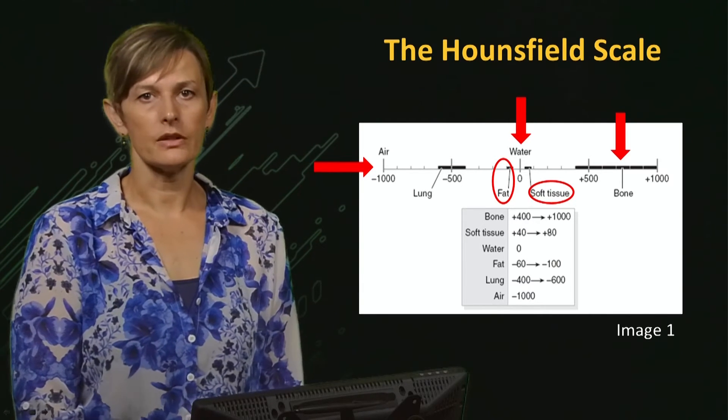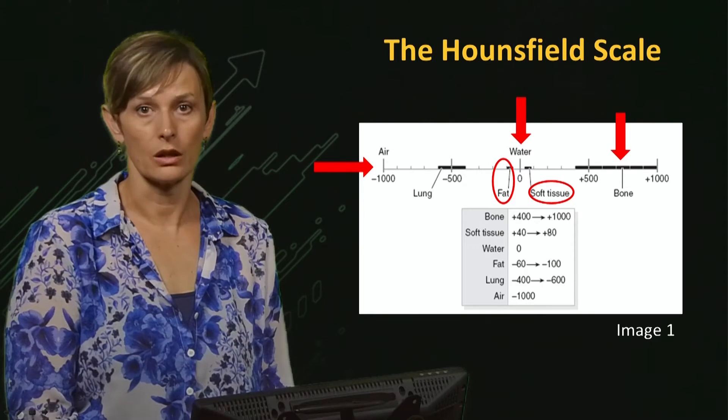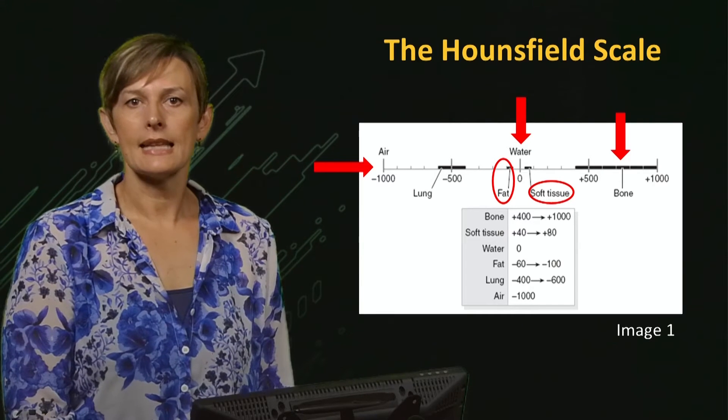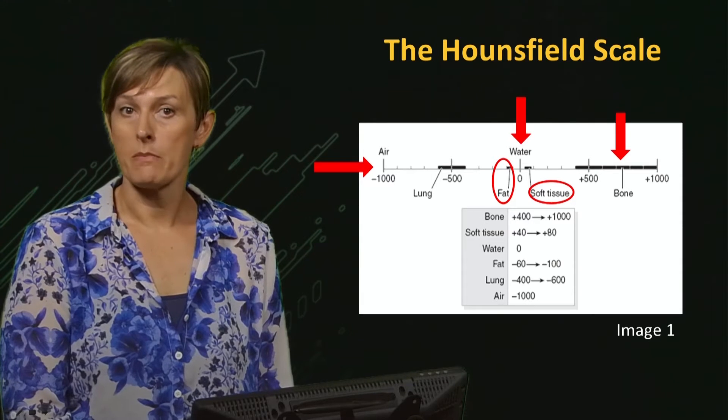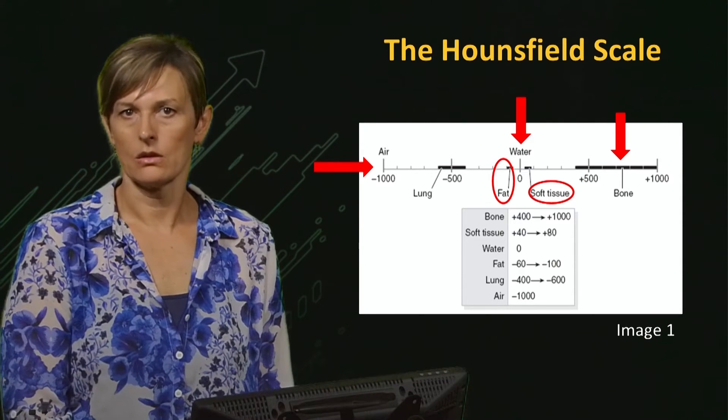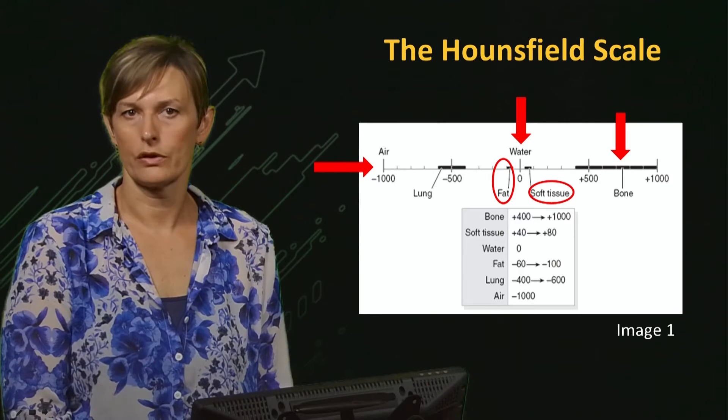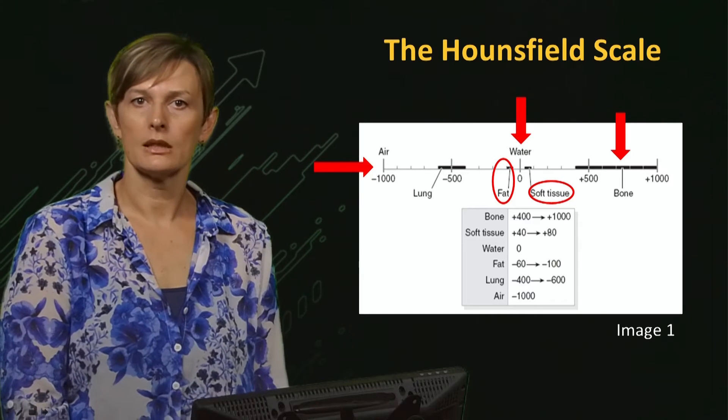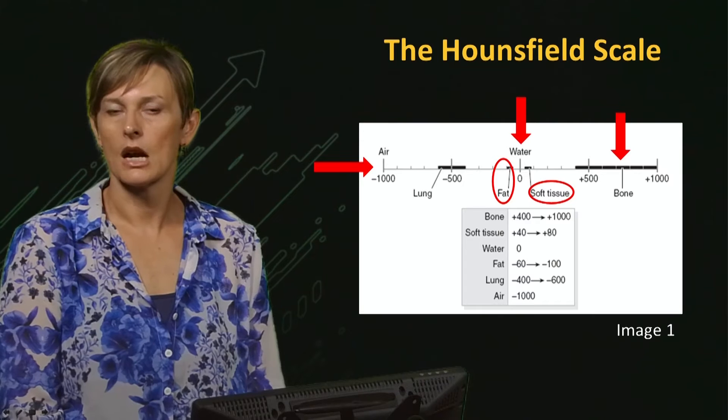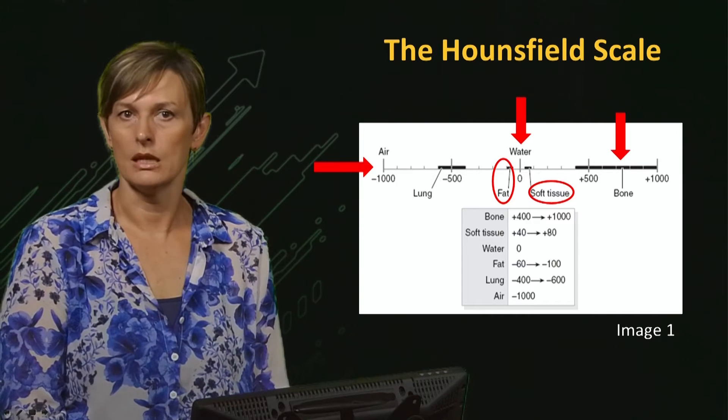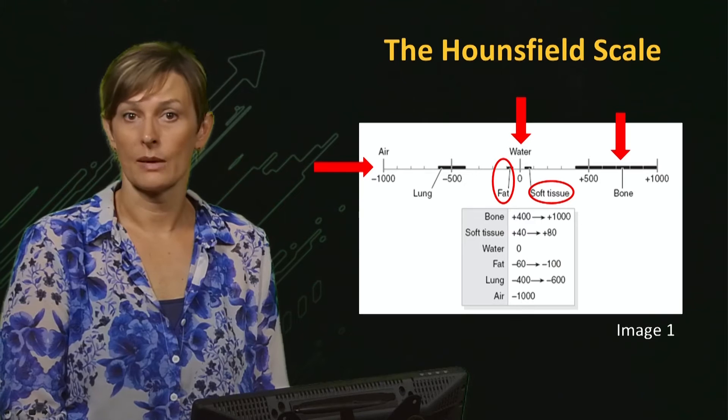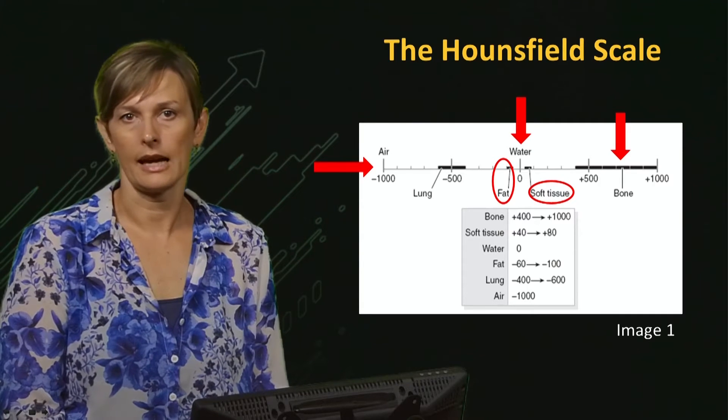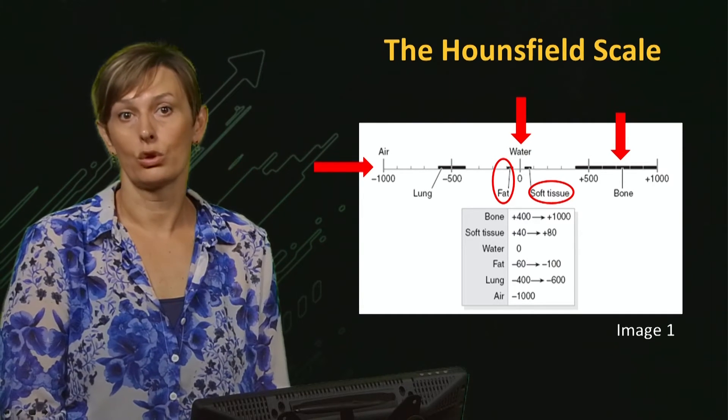The contrast between soft tissue with HU value from zero to hundred often challenges the resolution of CT scanners. Let's take an example of gray and white matter in the brain. The gray matter, which has a pinkish gray color, contains nerve cell bodies, whereas the white matter is made of connection axons transporting information between different parts of the brain. Both are soft tissue in the brain and the difference between the two is approximately five to ten HU. So the contrast resolution of the CT scanners need to be high to pick up such a small difference.